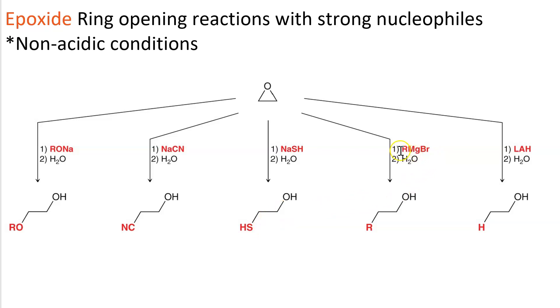When we use a Grignard reagent, an alkyl-magnesium-bromide followed by water, we get an R-group, vicinal to the alcohol.